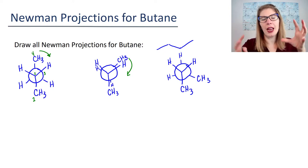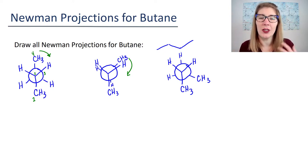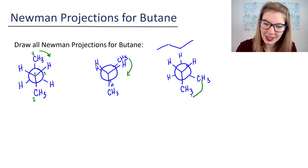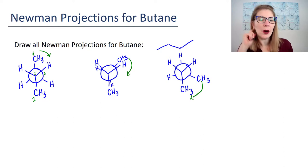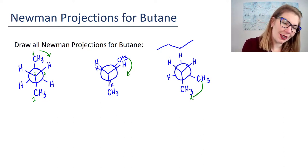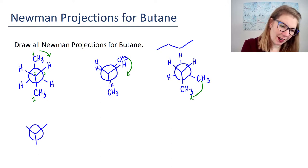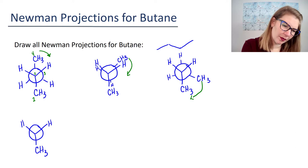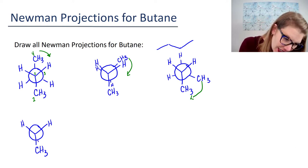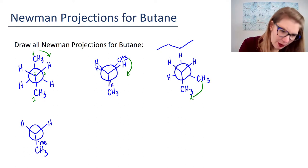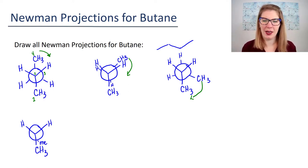All of the other atoms that the back carbon is connected to rotate as well. Now let's rotate again—I'm going to take that CH3 and rotate it another 60 degrees. When I do that, those two CH3s are going to be really close to one another. They are going to be eclipsing.